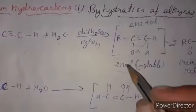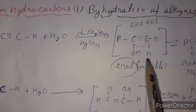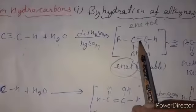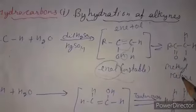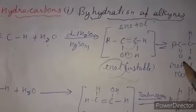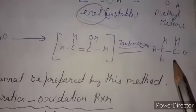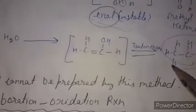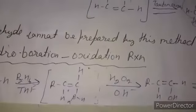The enol is unstable: the hydrogen migrates to the adjacent carbon and the double bond shifts to the oxygen, forming a methyl ketone. The product depends on the starting reactant. If a terminal alkyne is used, an aldehyde — acetaldehyde — is obtained as the main product. One limitation: formaldehyde cannot be obtained by this method.